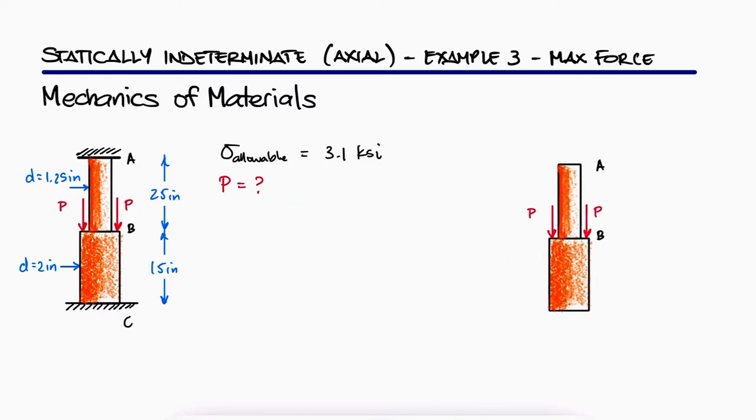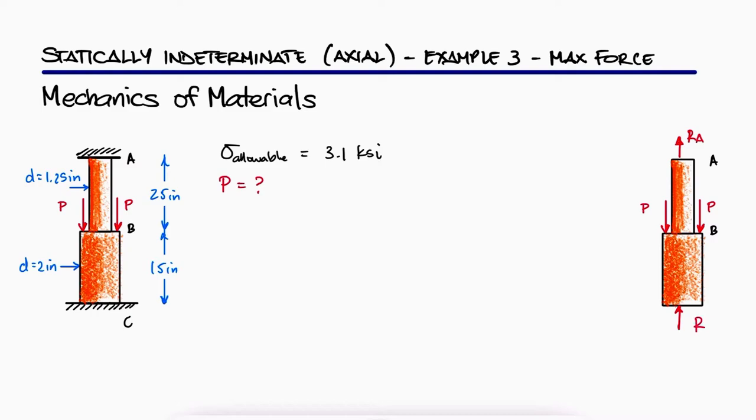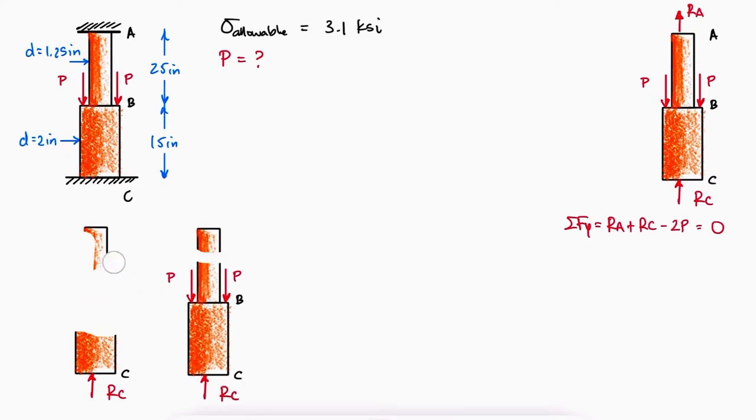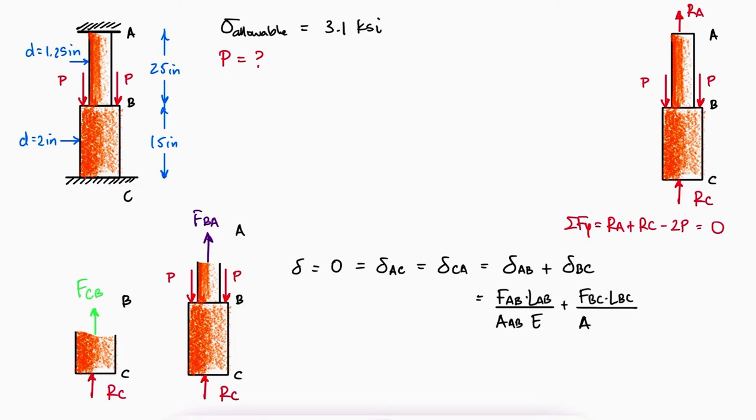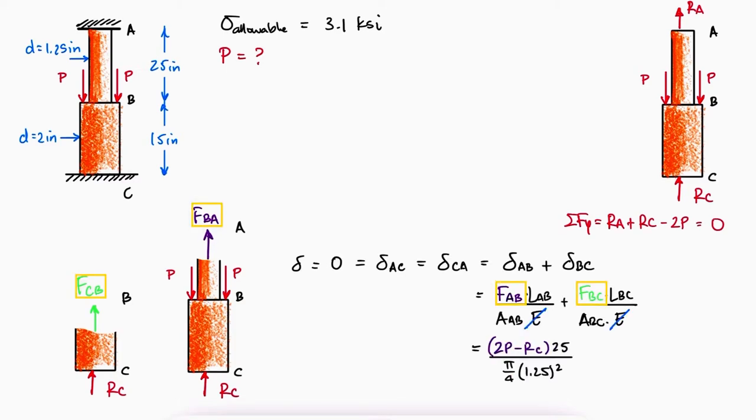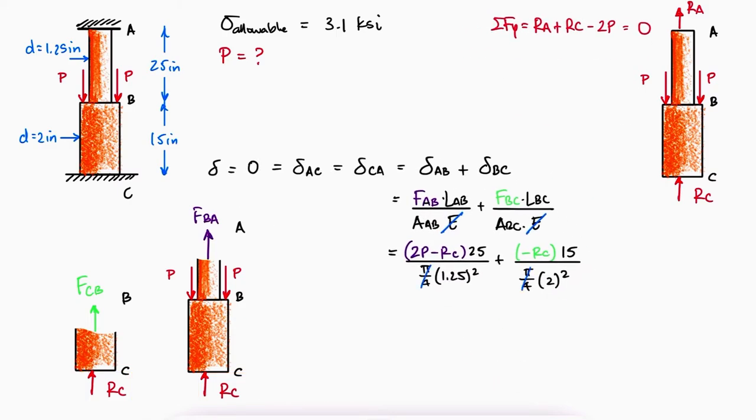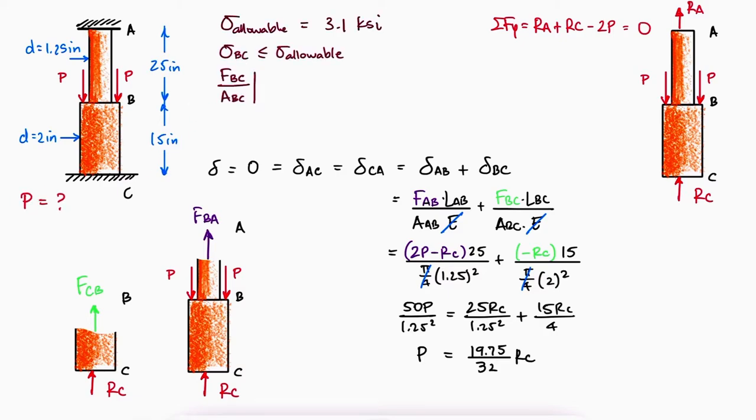Just like we did for examples 1 and 2, we'll use the free body diagram to write the sum of forces in the y direction and cuts at two different sections to write the known deflection of 0 at any of the fixed supports A or C as the deflection of each section and the forces in terms of the reaction force to solve for P in terms of the reaction force at C.